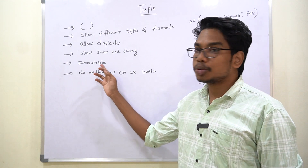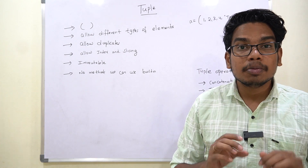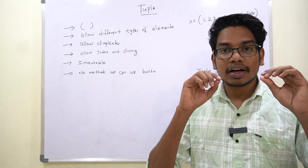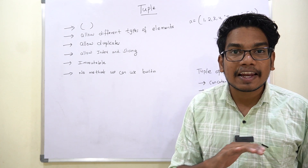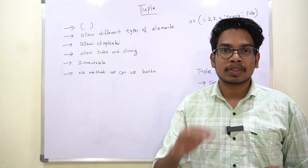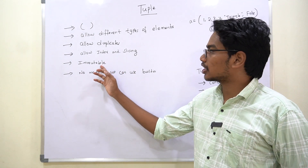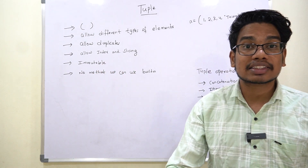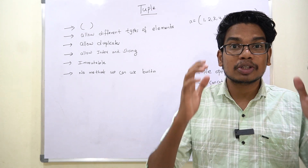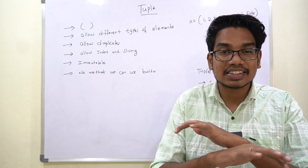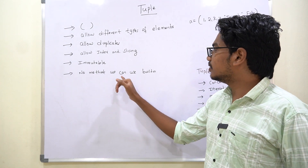Let's learn IMMUTABLE. TUPLE is immutable — what does that mean? It's simple. The data in a tuple is used as-is. Once we define a tuple, we can't change that.